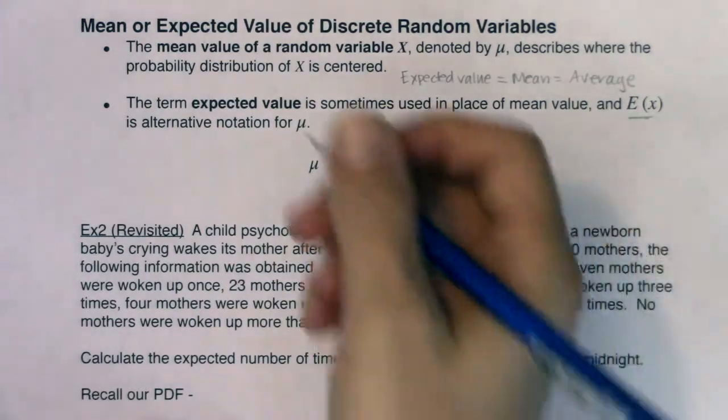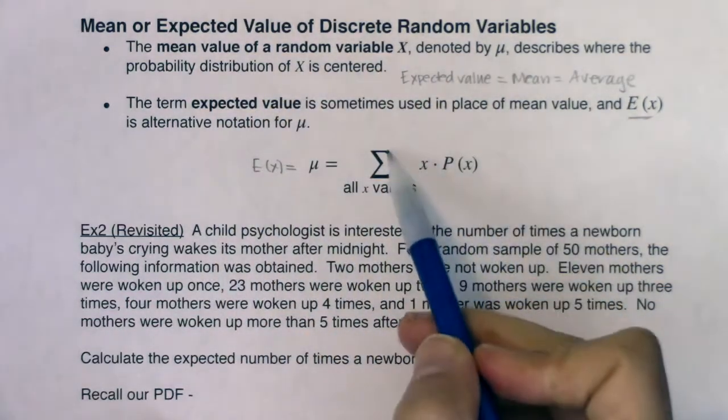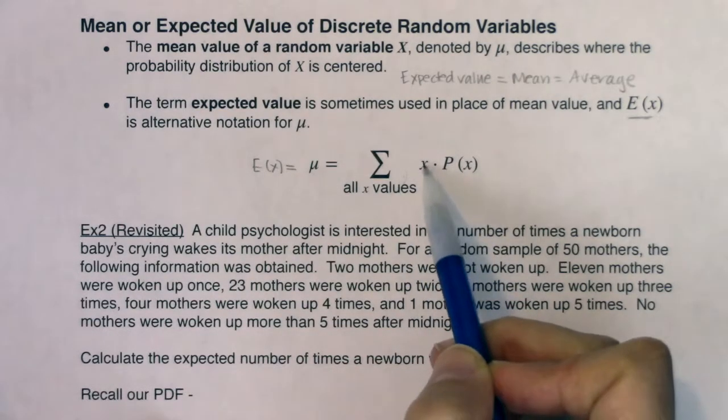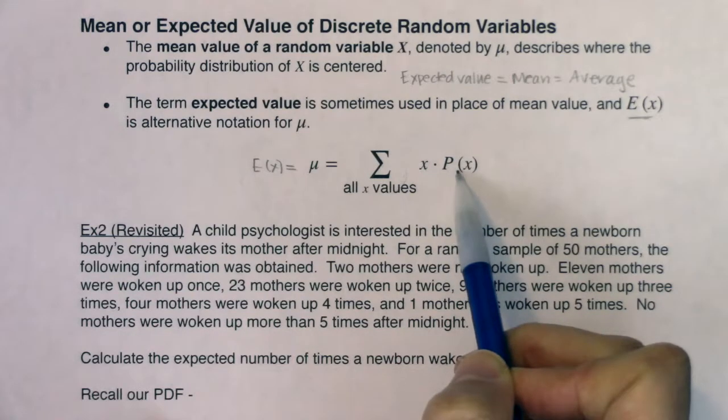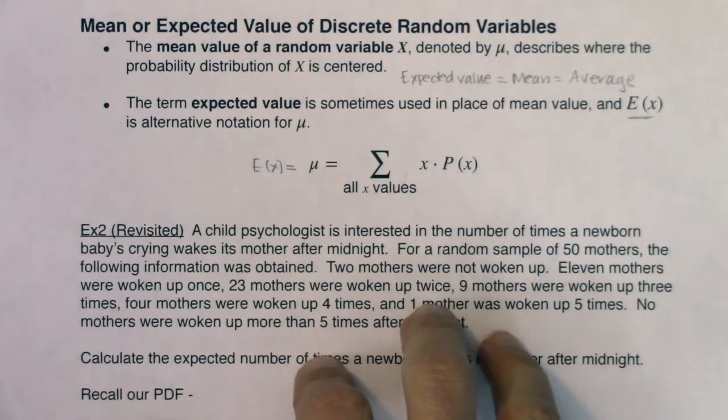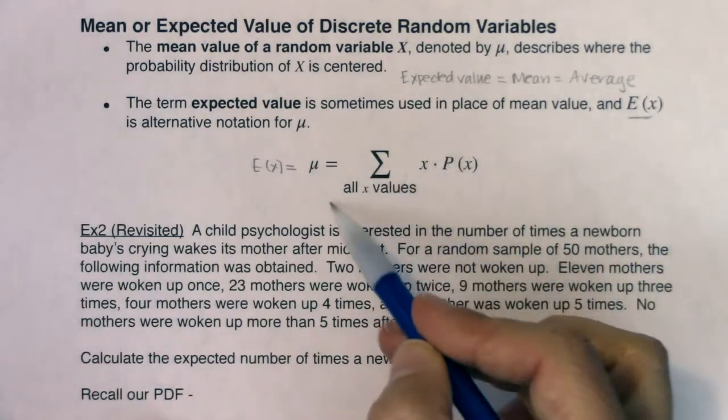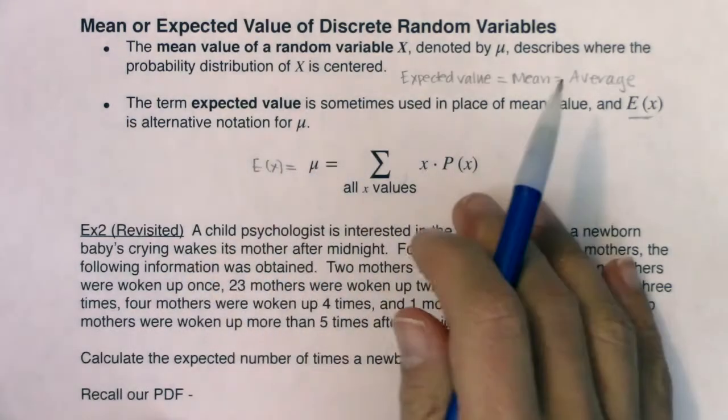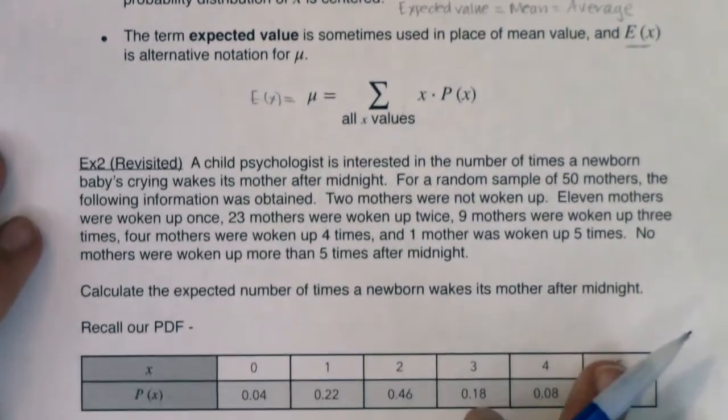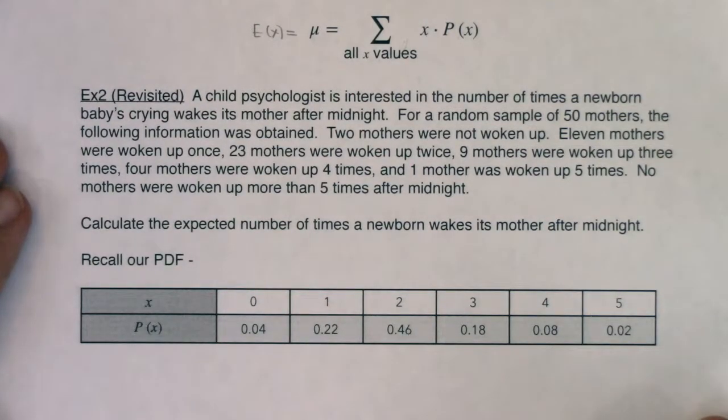Here's the formula for how you calculate the expected value. You remember this guy, capital sigma - we're going to add some stuff, a bunch of products. We're going to add a bunch of x's times your P(x), and we're going to go through all x values.